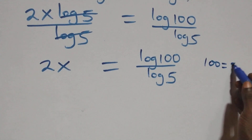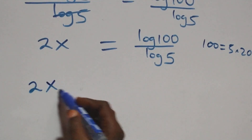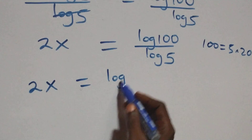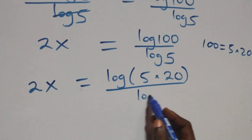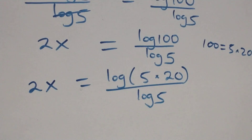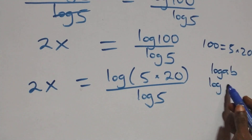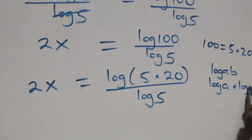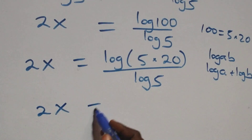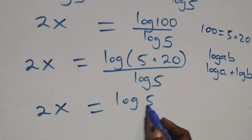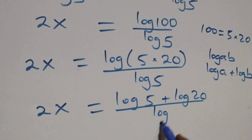Next step: we write 100 as 5 times 20. Then it becomes 2x equals log(5 times 20) over log 5. This follows the product law of logarithms, where log(A times B) is the same thing as log A plus log B. All we have becomes 2x equals (log 5 plus log 20) over log 5.